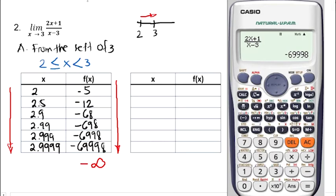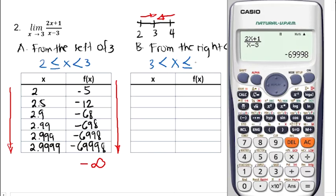Next, let's continue to our second table and assign values from the right of 3. The nearest integer from the right of 3 is 4. So we assign values of x from 4 going to positive 3, moving closer and closer. The possible values of x should be x greater than 3 but less than or equal to 4. So let's start from 4, then 3.5, 3.1, 3.01, 3.001, and 3.0001.